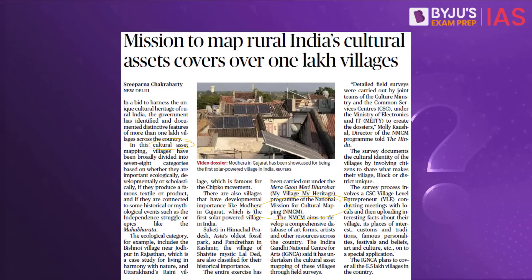This program has mapped villages and broadly divided them into seven to eight categories based on whether they are important ecologically, developmentally, scholastically, whether they produce textiles or any other product. Under the ecological category, we have the Bishnoi village near Jodhpur in Rajasthan, which is a case study for living in harmony with nature. The Raini village is famous for the Chipko movement, which started in Raini, Uttarakhand. Modera is the first solar-powered village in India. Sukethi in Himachal Pradesh has Asia's oldest fossil park. These are all identified under My Village, My Heritage under the National Mission for Cultural Mapping.